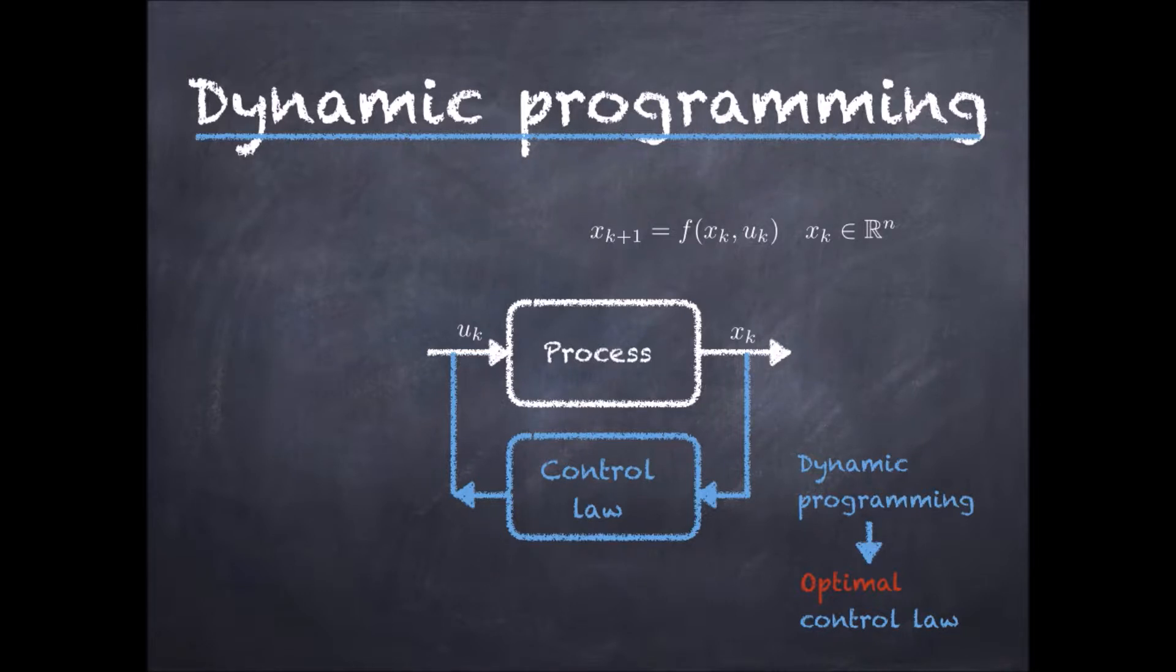This is where approximate dynamic programming enters the picture. It is meant, as I have just said, for problems with large n. Instead of aiming for the optimal policy, it aims at suboptimal policies. The research question is then, how to find control laws close to optimal.